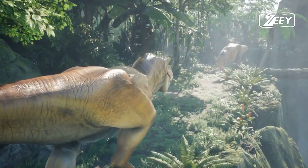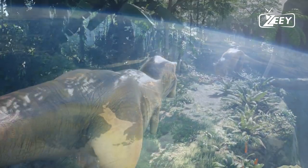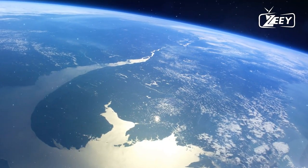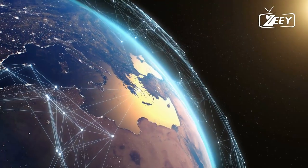In the aftermath of the extinction, mammals and other small creatures that had been lurking in the shadows of the dinosaurs began to thrive and diversify, eventually giving rise to the incredible range of life forms that we see on Earth today.